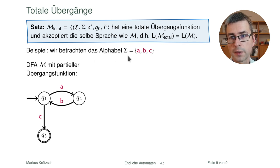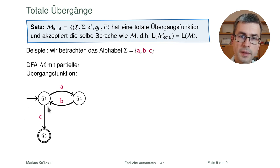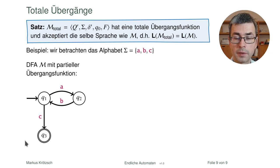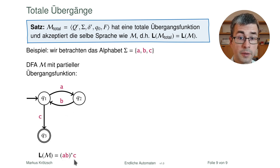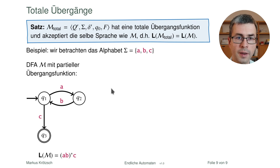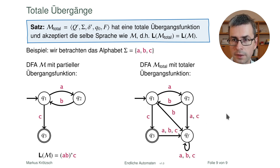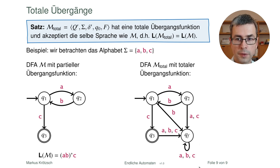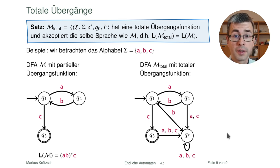Ein kleines Beispiel: Wir betrachten das Alphabet {a, b, c} und einen DFA mit partieller Übergangsfunktion — a und b können gelesen werden und der Automat bleibt im selben Zustand, mit c gelangt man zum Endzustand. Die akzeptierte Sprache sind alle Wörter, bei denen beliebig oft a oder b wiederholt werden und am Ende ein c steht. Diesen Automaten machen wir total, indem wir einen vierten Fangzustand qf einführen: alle fehlenden Übergänge führen dorthin, und qf hat eine Schlaufe für alle Symbole. Damit haben wir einen totalen Automaten, der dieselbe Sprache akzeptiert.